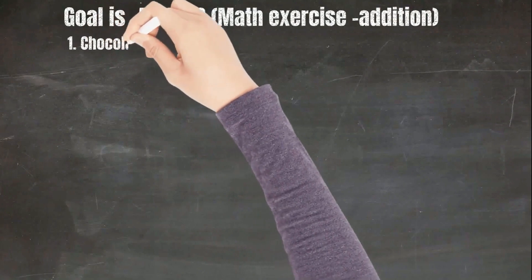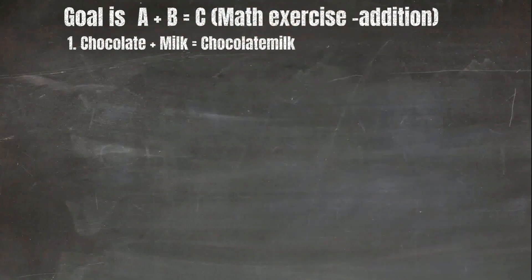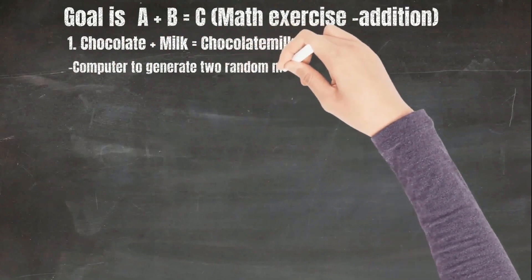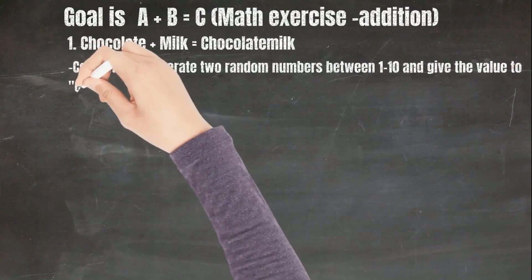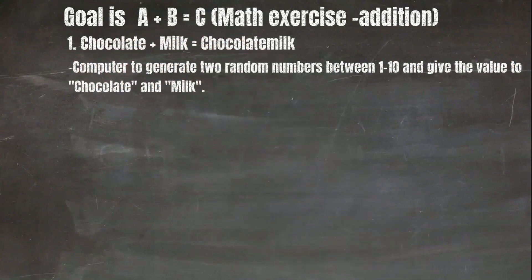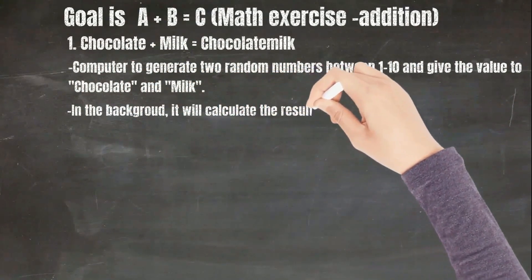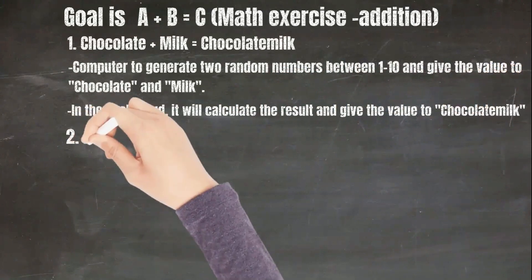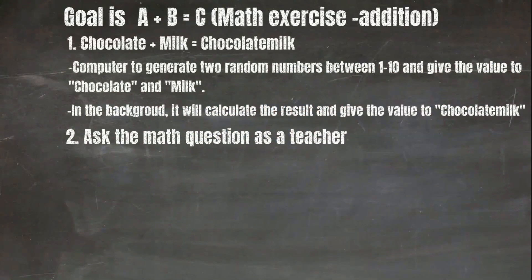So our first step is to make it more fun, like chocolate plus milk equals chocolate milk. The computer is going to generate two random numbers between 1 and 10 and give the value to chocolate and milk. Like chocolate is 3 and milk is 5. In the background, it will calculate the result and give it to chocolate milk — chocolate milk will equal 8. Then the character will ask the math question to you, like it's a teacher.